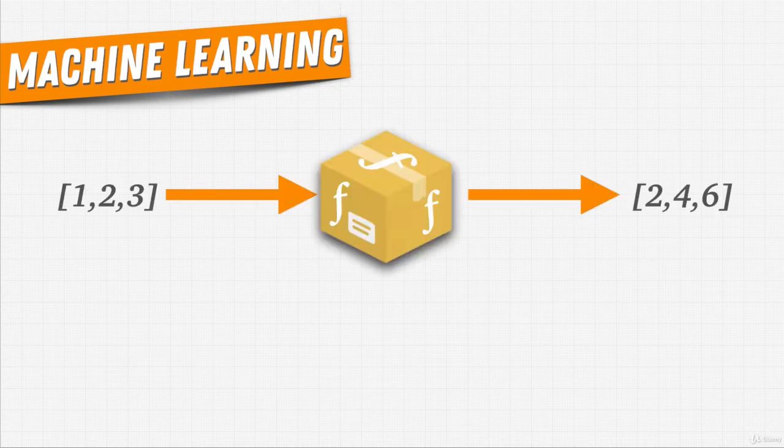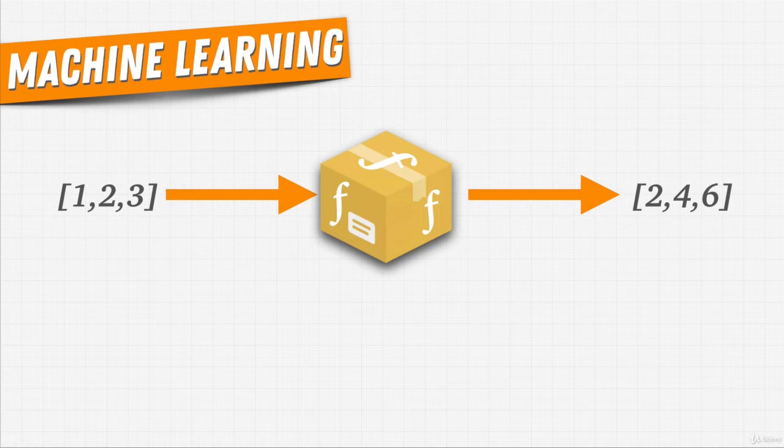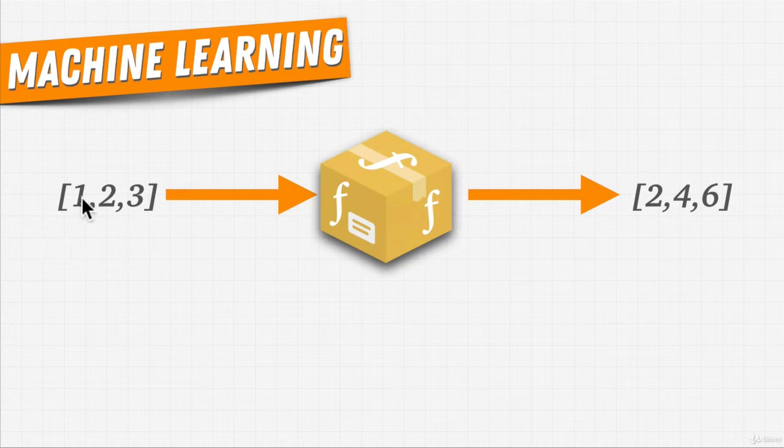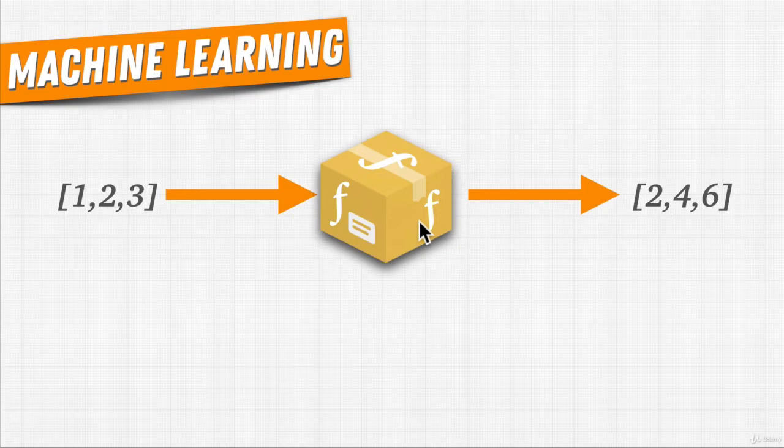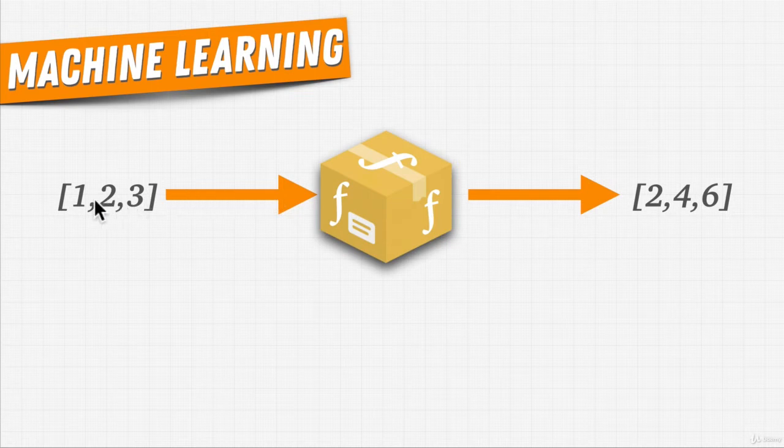Well, you remember this diagram, I hope. It's simply what we do in programming. That is, we give an input, let's say a list of one, two, three, we give it to a function, and there's an output of two, four, six. So clearly, this function multiplies the items in our list by two.